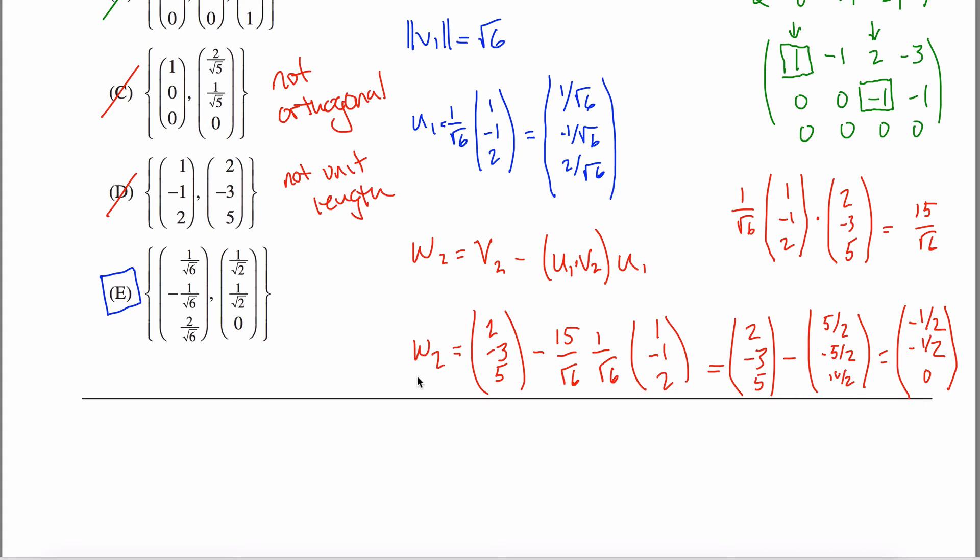And so I'm feeling pretty good about myself. I have this thing W2 here, but I use W instead of U because that's not my answer because it's not unit length. So the last little thing I have to do is find the length of W2. So I got negative 1 half squared, which is 1 quarter, plus negative 1 half squared, which is another 1 quarter. So what I get is the square root of 2 quarters, aka the square root of 1 half, aka 1 over root 2. So this is the length. I want to scale by this length. So I want to take this vector right here, and I want to divide it by this length right here, which is equivalent to saying that U2 is equal to the square root of 2 times negative 1 half, negative 1 half, zero. So I get negative root 2 over 2, negative root 2 over 2, and zero.